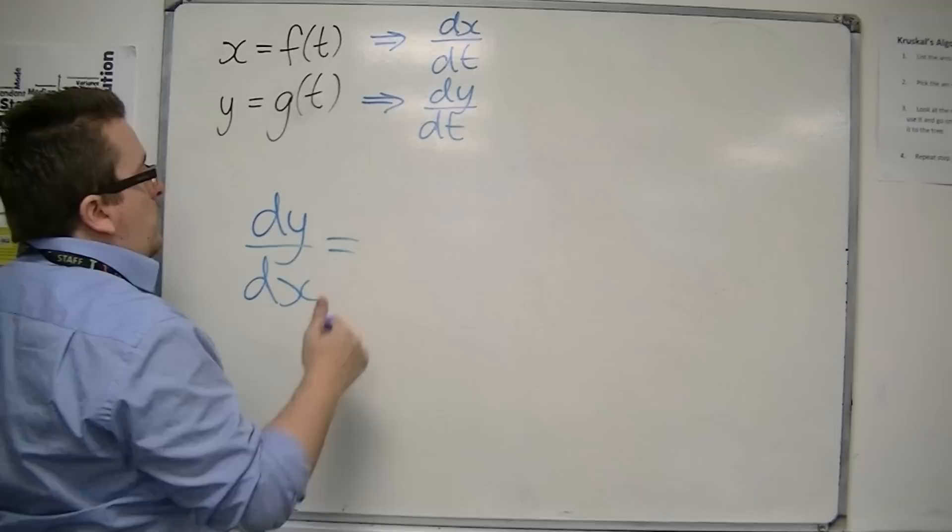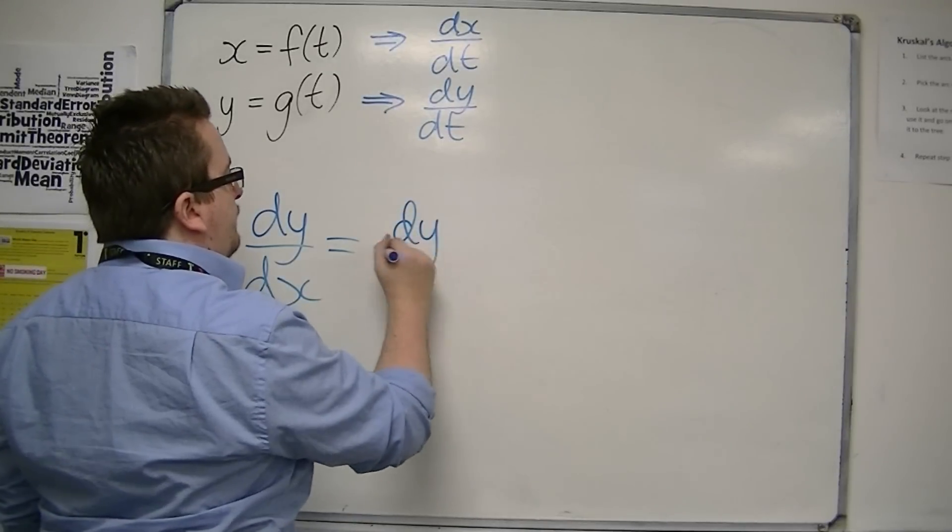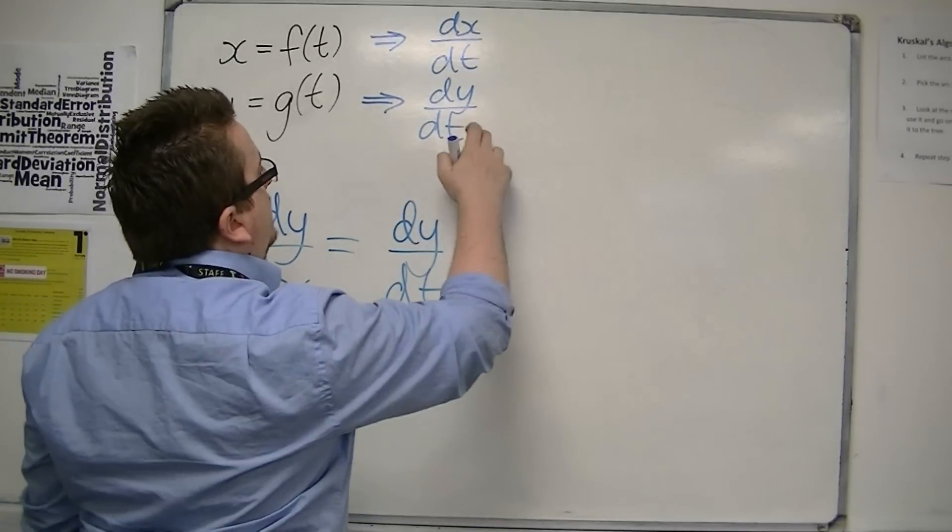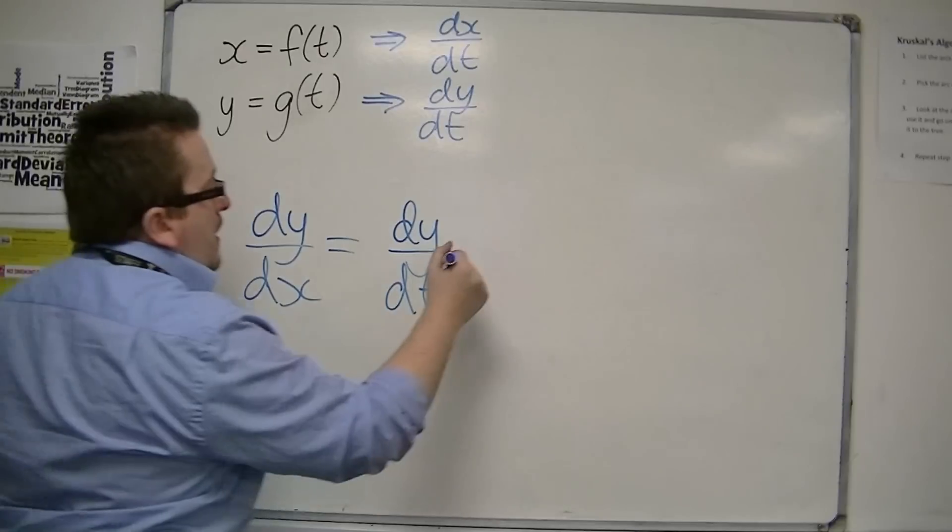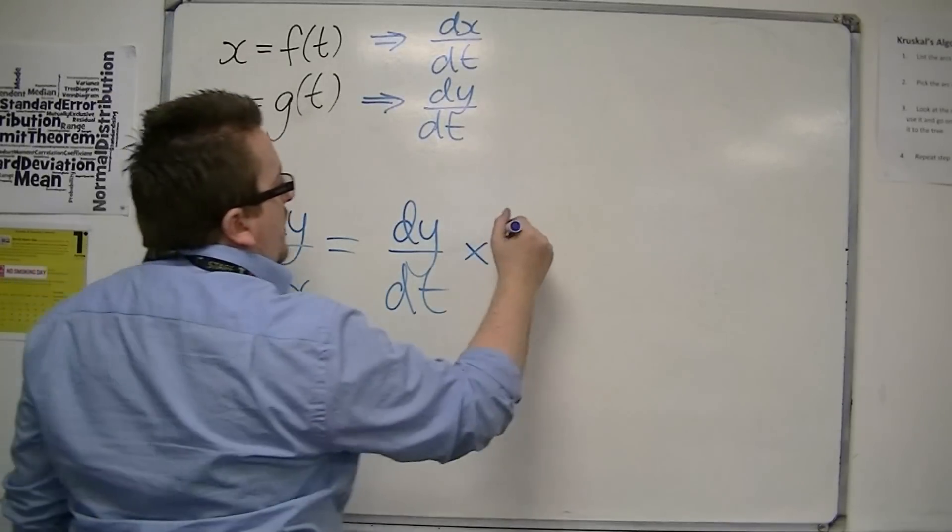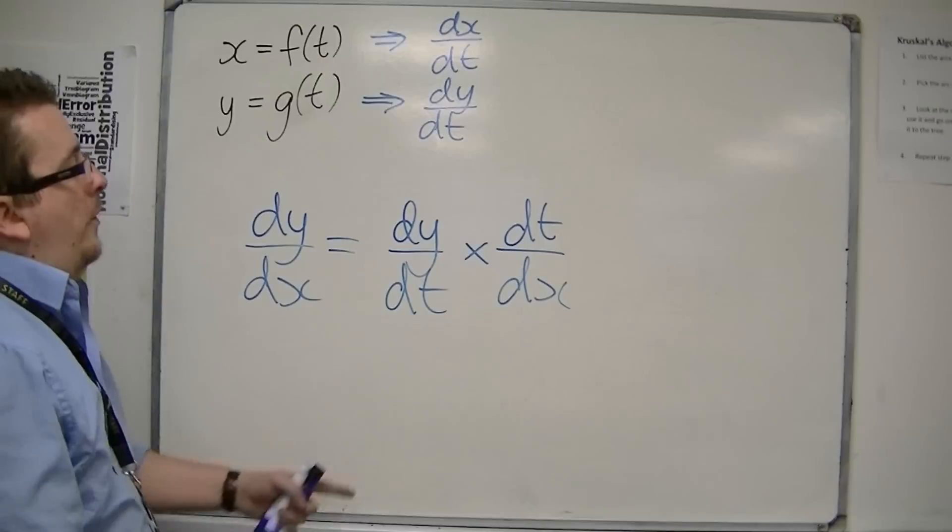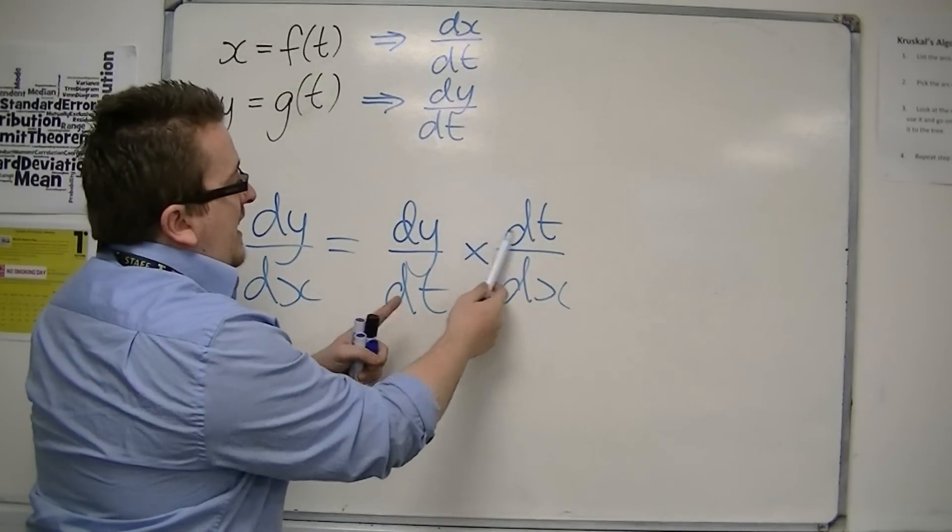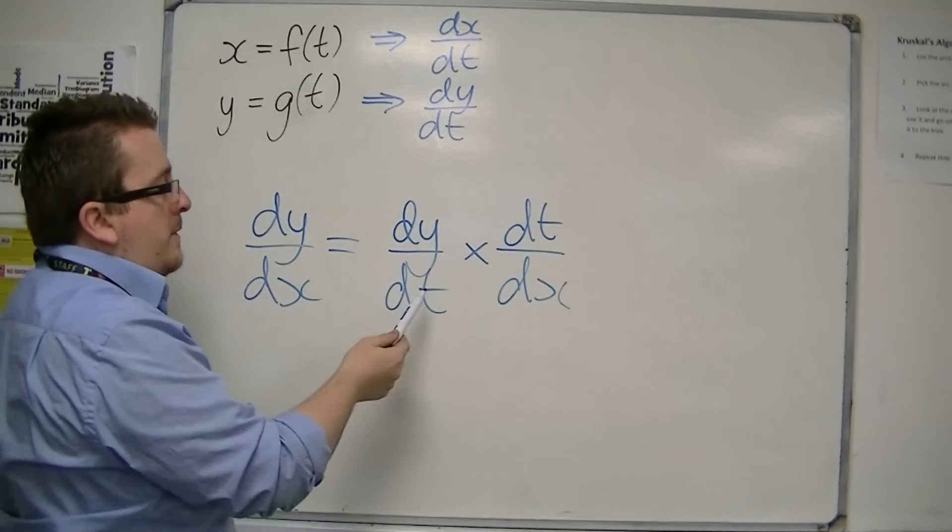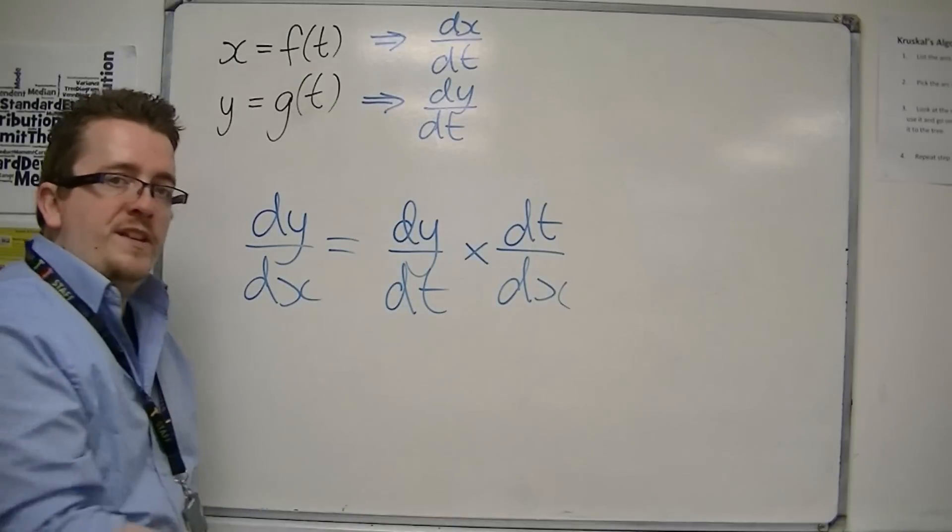So, I can see that I've got dy by dt. There. And if I multiply that with dt by dx, then effectively what's going to happen is that the dt's are going to cancel one another out, and I'm going to be left with dy over dx.